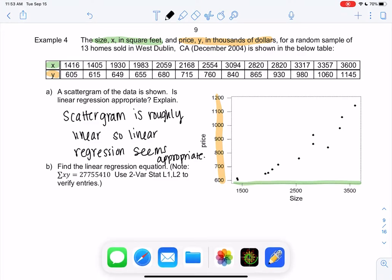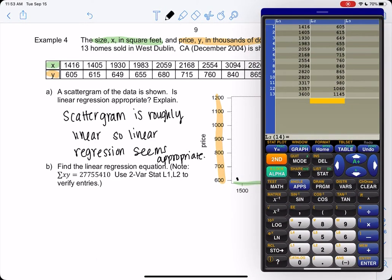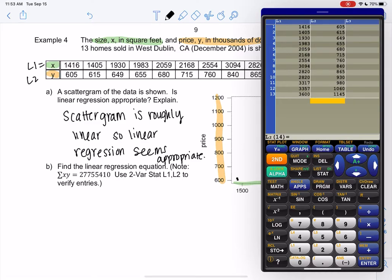So I already entered the data. So go ahead and enter the data and then meet me back at L1 and L2. So stat, edit. L1 is always X, L2 will be Y. So then once you're ready, come back to the video and I'll show you how to check for typos before we do regression.